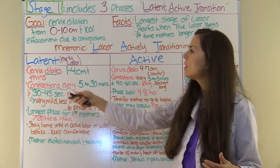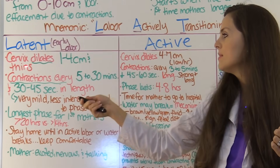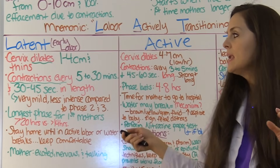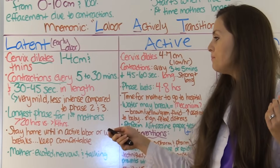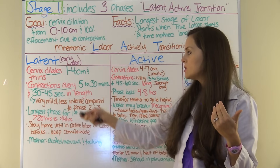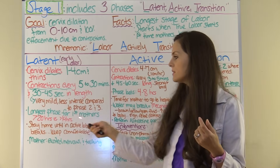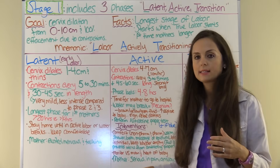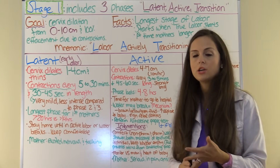The first phase is called the latent phase, or sometimes referred to as early labor. The cervix is going to dilate from one to four centimeters and thin. Contractions will be every five to 30 minutes and 30 to 45 seconds in length. These contractions are very mild compared to what will happen in the active and transition phases. This phase is the longest for first-time mothers, and some women may not even realize they're in labor because contractions are mild. If the woman is at home, she should stay there and try to keep comfortable and busy. During this phase, the mother will be excited, nervous, and talking.